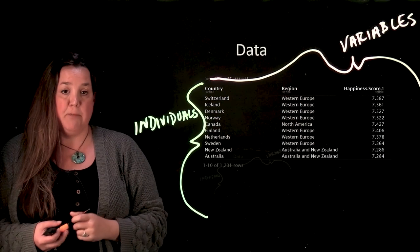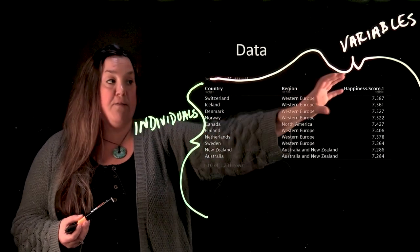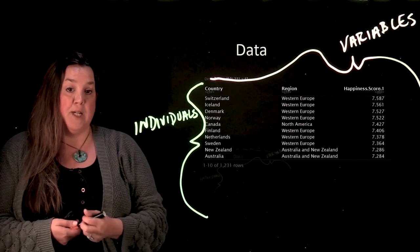So this is the appropriate way to set up a data set. You always have the individuals represented in the rows, and then the different variables are going to be represented in the columns.